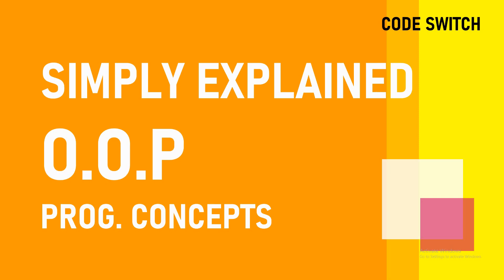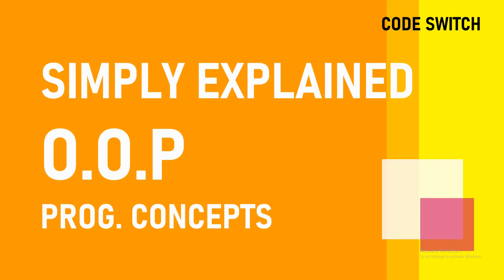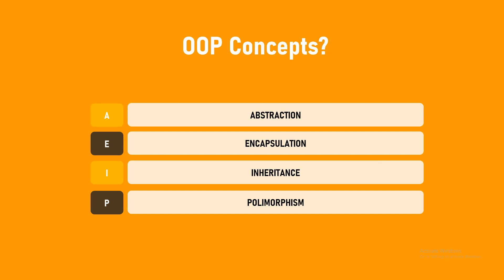Now you might already know a lot of languages — many of them are object oriented: C#, JavaScript, Java. Object oriented programming concepts are divided into 4 main concepts. These are common interview questions. The first one is abstraction, second one encapsulation, third one inheritance, and the last one polymorphism.